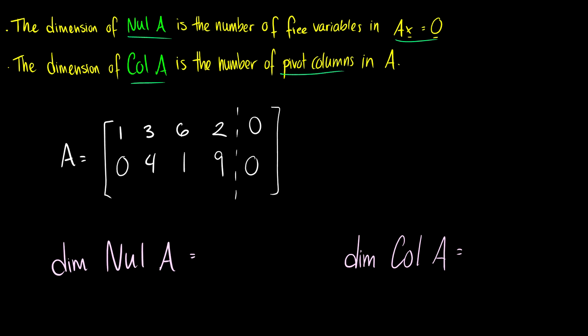Let's take a look at this matrix A: [1, 0, 3, 4; 6, 1, 2, 9], augmented to zero. We want to find the number of pivot columns and free variables.